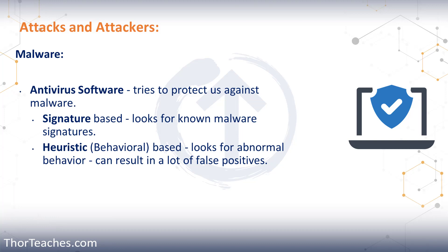The other part of the antivirus is called heuristic or behavioral-based. That part of the system looks for abnormal behavior. If all of a sudden we see a ton of network traffic, that could be a worm spreading due to aggressive self-propagation. If one of our systems suddenly sends a bunch of email traffic out and it's not an email server, maybe someone compromised it and it's being used as a bot in a botnet.